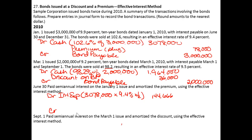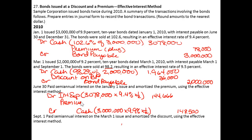We're going to credit cash for the bond, which is $3 million times the stated rate of 9.9%, semi-annual, so half a year. Every six months, for as long as the bond is outstanding, we'll send out a check for $148,500. So the premium is going to get plugged for $3,834 — that's the plug to amortize the premium.